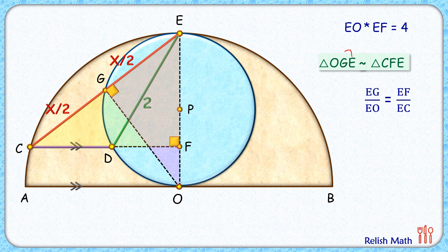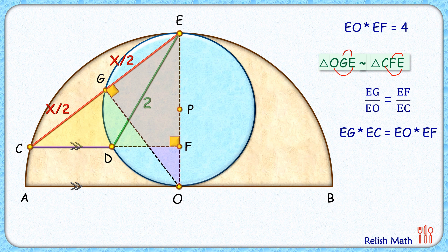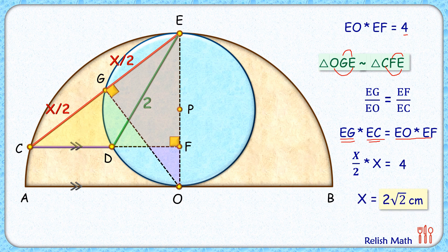Since the triangles are similar, the ratio of corresponding sides will be equal: EG upon EO equals EF upon EC. Cross multiplying gives EG times EC equals EF times EO. EG is x over 2, EC is x, and EO times EF is 4. So we get x over 2 times x equals 4, giving us the value of x as 2 root 2 centimeters. That's our answer from the formal approach.